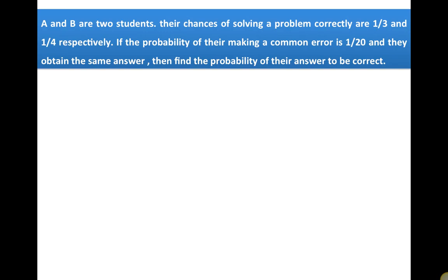In this question, A and B are two students whose chances of solving a problem correctly are 1/3 and 1/4 respectively. If the probability of their making a common error is 1/20 and they obtain the same answer, find the probability of their answer being correct.